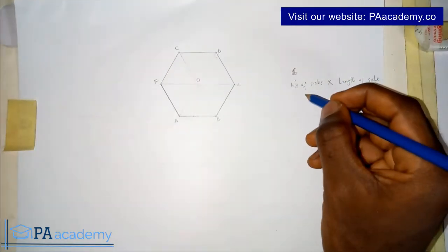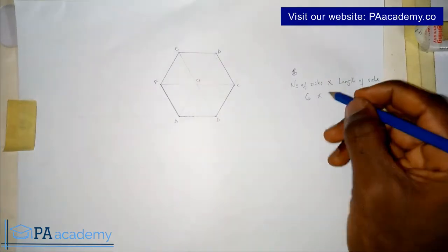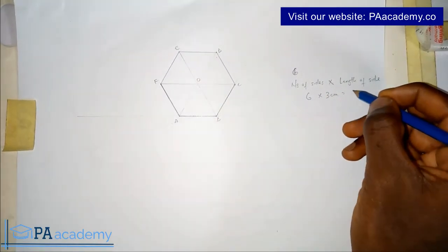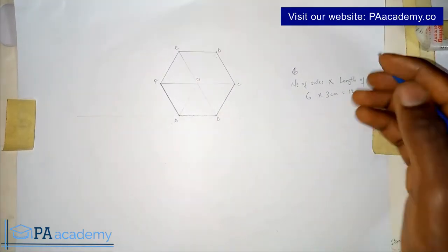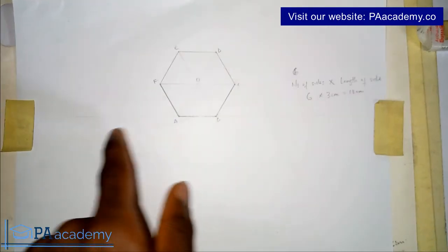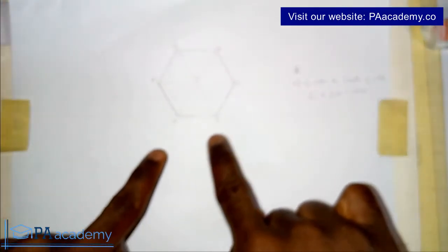So the number of sides is 6 and then the length of each side is 3 cm. So that is 18 cm. So you are going to extend this line AB. So that line AB will now be 18 cm. So let's do that.